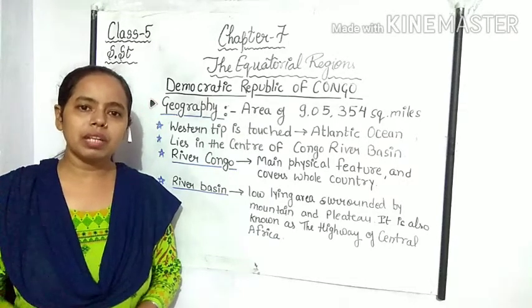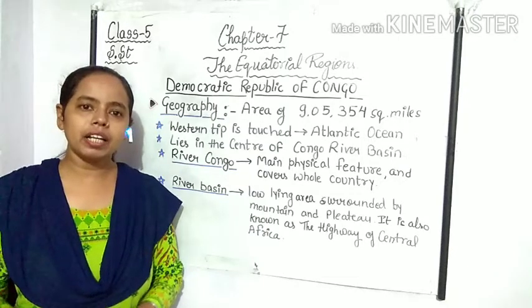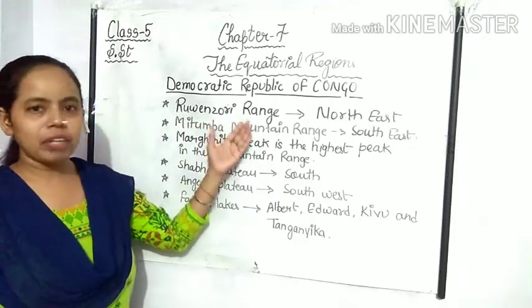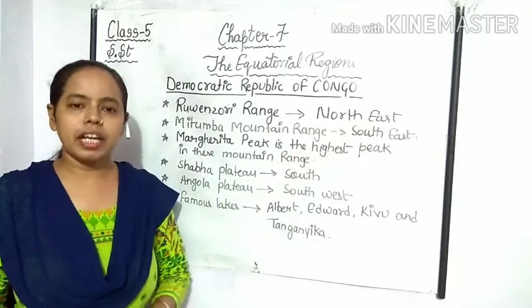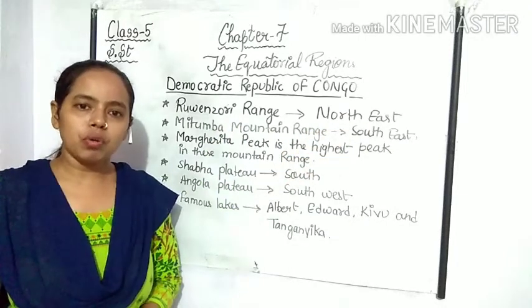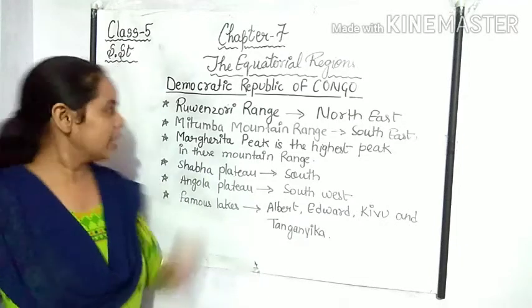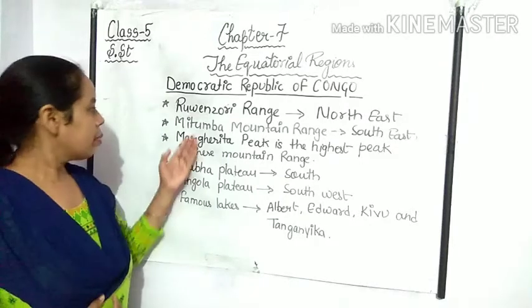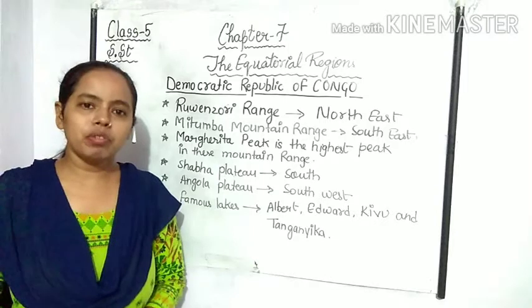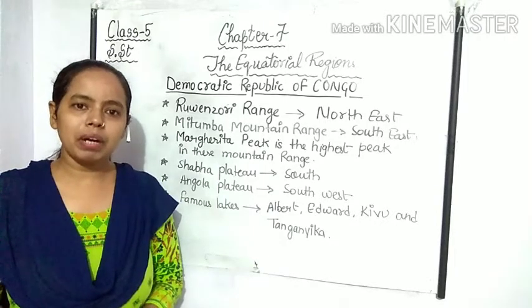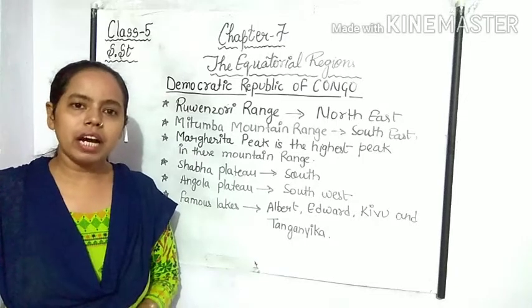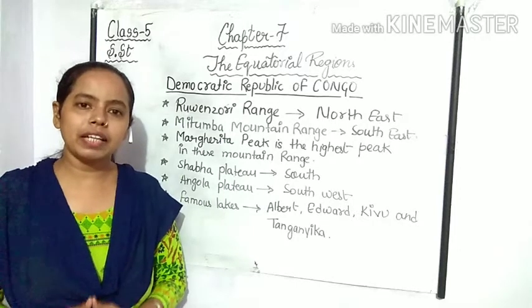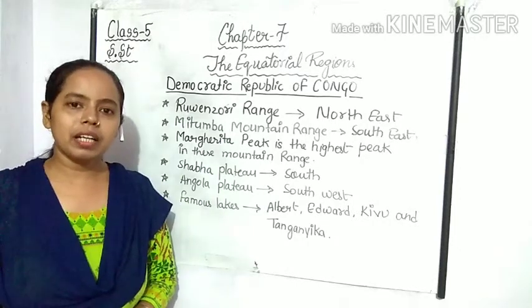Now let's know about some important mountains, plateaus, and other physical features of the Democratic Republic of Congo. In this country, the Ruvenzori mountain range is found in the north-east direction. In the south-east direction, there is the Mitumba mountain range. Margarita Peak is the highest mountain peak among these mountain ranges.